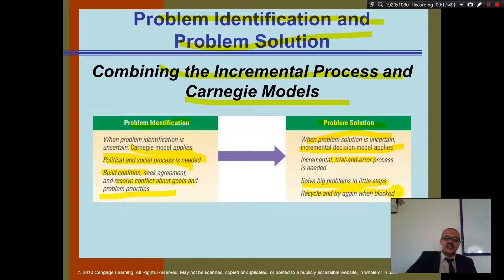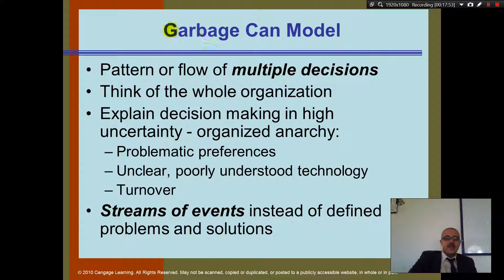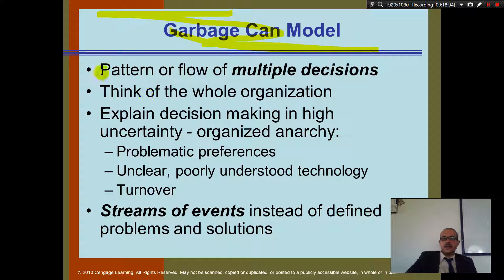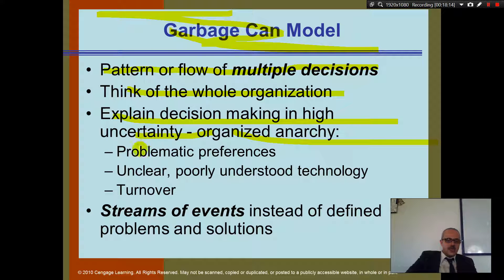The garbage can model applies when you don't know the problem and you don't know the solution. You try things without fully understanding what the problem is. It describes a pattern of flow of multiple decisions across the whole organization, explaining decision making under high uncertainty, organized anarchy, problematic preferences, poorly understood technologies, and high turnover.